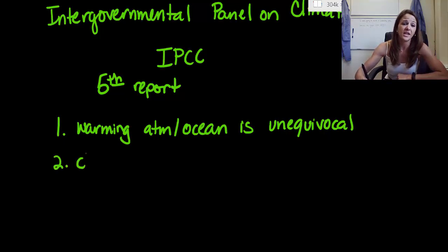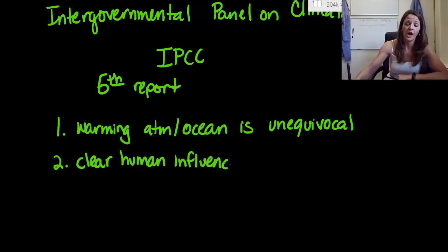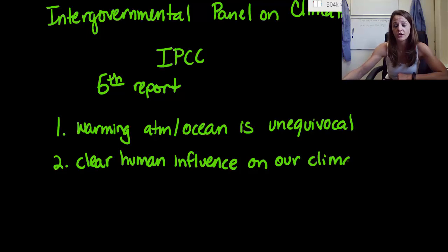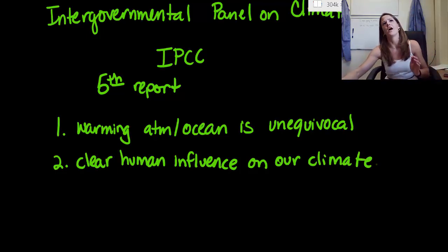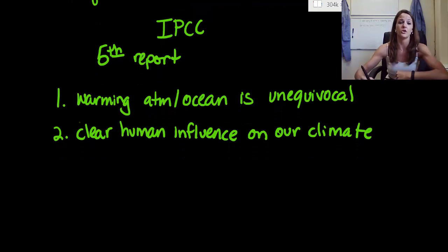The second thing is that there is a clear human influence on our climate. So we can no longer say, oh maybe it's just natural causes, carbon dioxide is definitely in these cycles, it's going up and down, it's just natural. No, we can't say that anymore. It's definitely that there is a human influence.